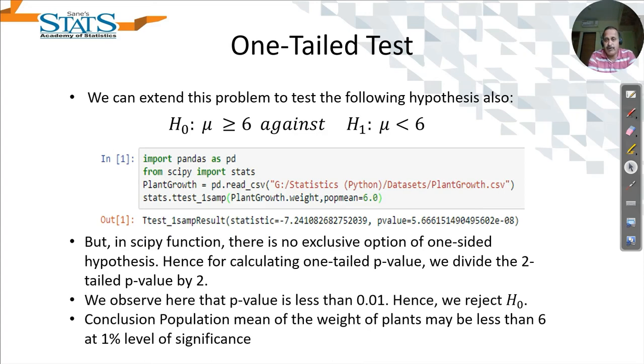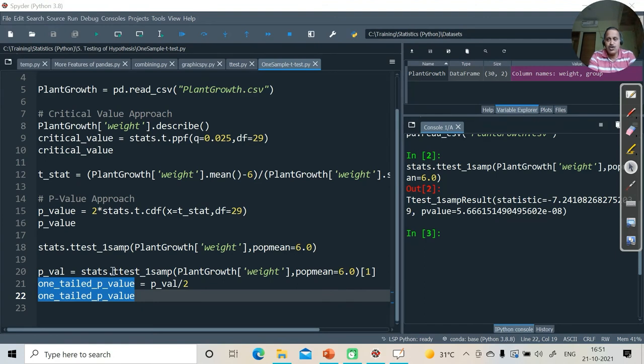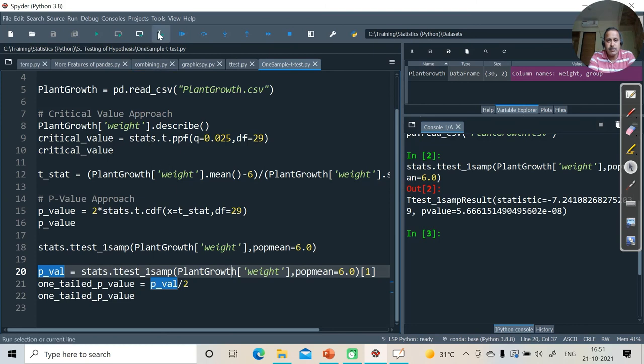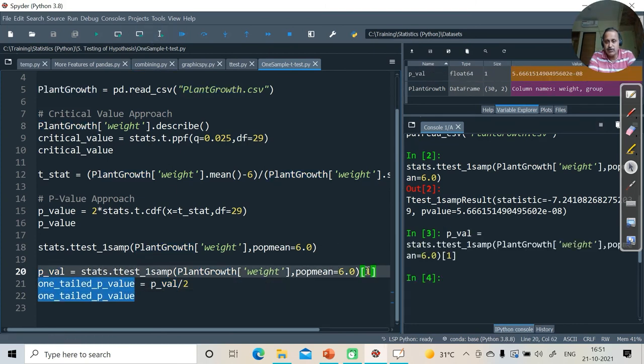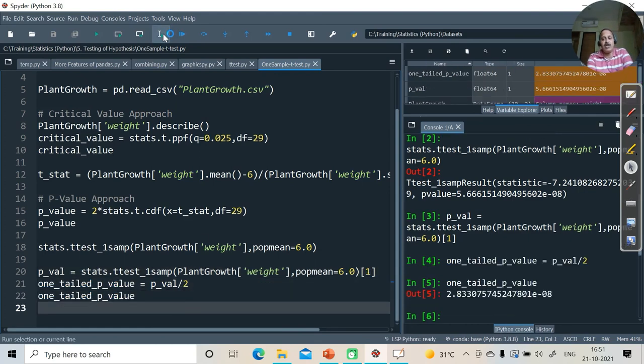Hence for finding the p-value of one-tailed, we require to divide the p-value by 2. As you see over here, I have obtained this p-value. This is the second value, that's why the square bracket 1 has been given, and then the one-tailed p-value I have obtained. Hence we can reject with 5% or even 1% level of significance looking at the p-value.